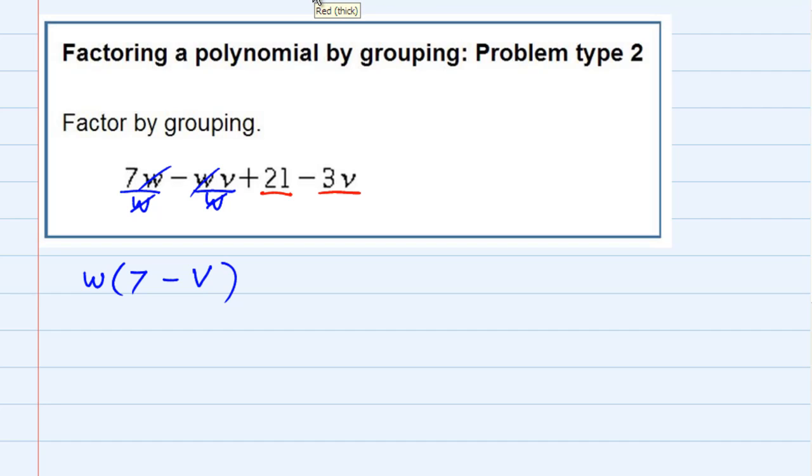And now for the second two terms, the 21 and the 3v, I could factor out a 3. Factoring out a 3, what would be left? I would be dividing by 3, so the 21 divided by 3 would give me a 7, and the 3 would cancel in the second one, leaving me with a minus v.